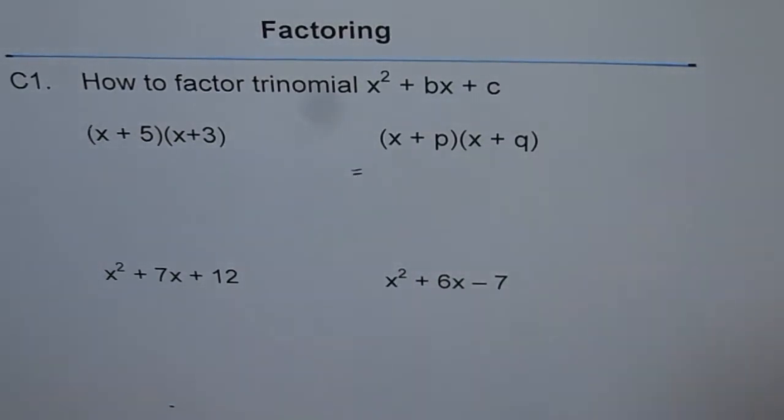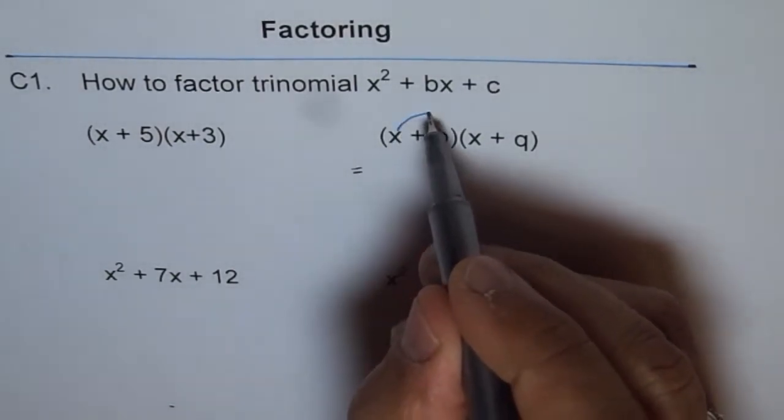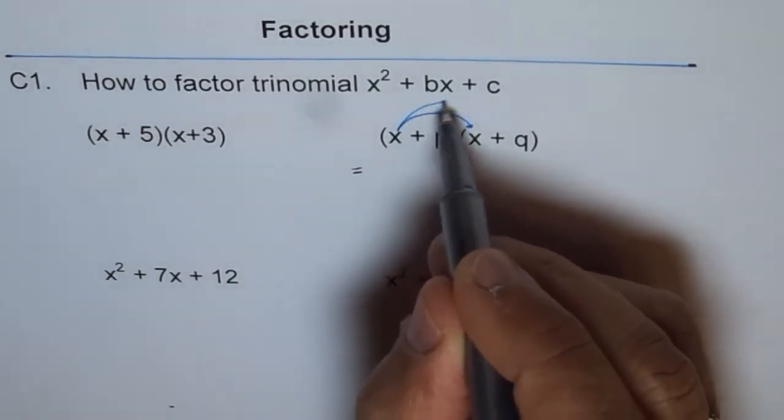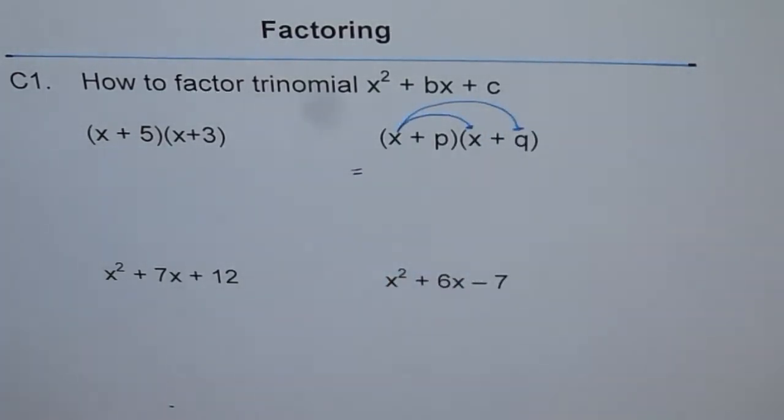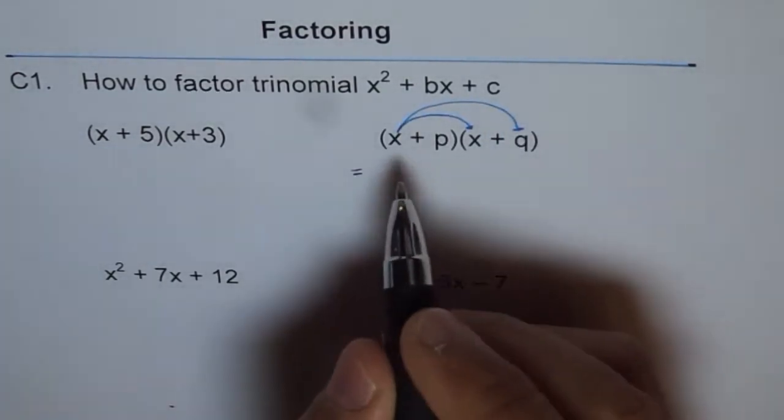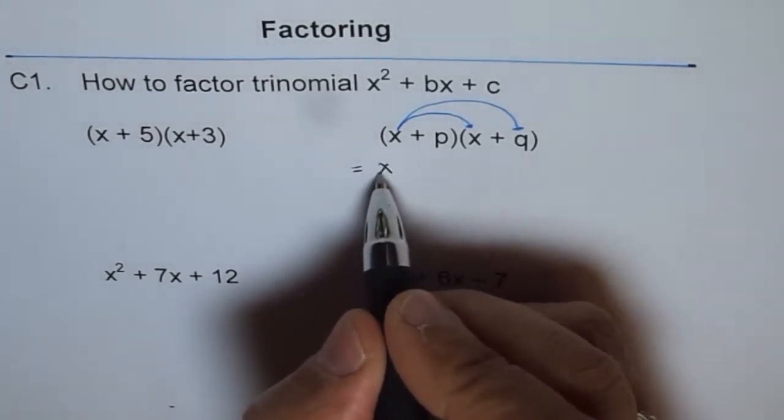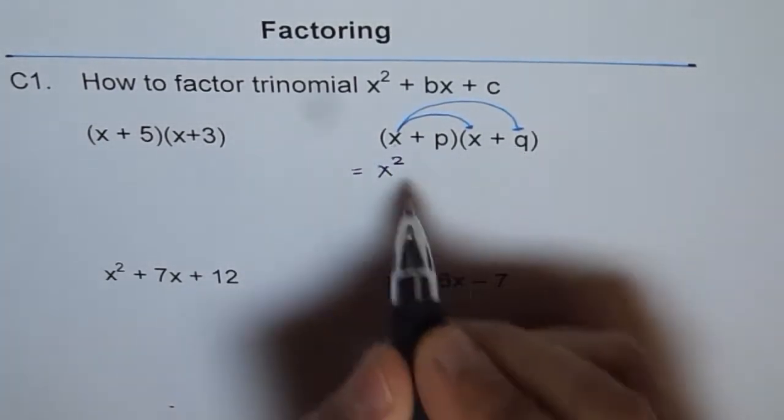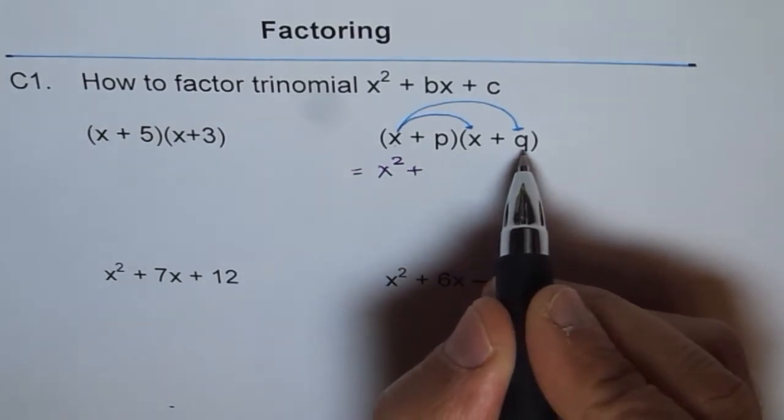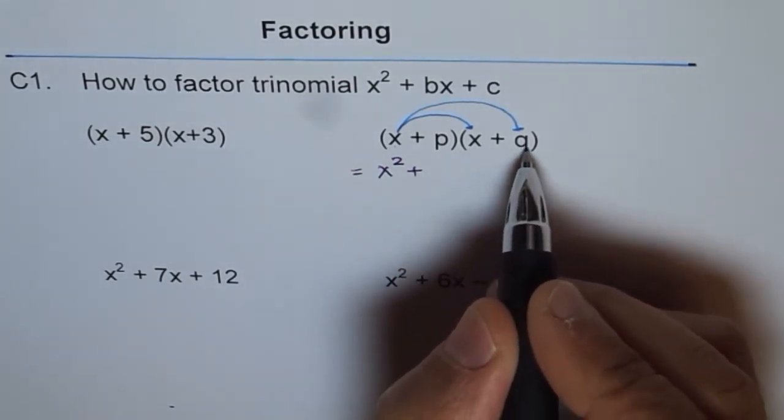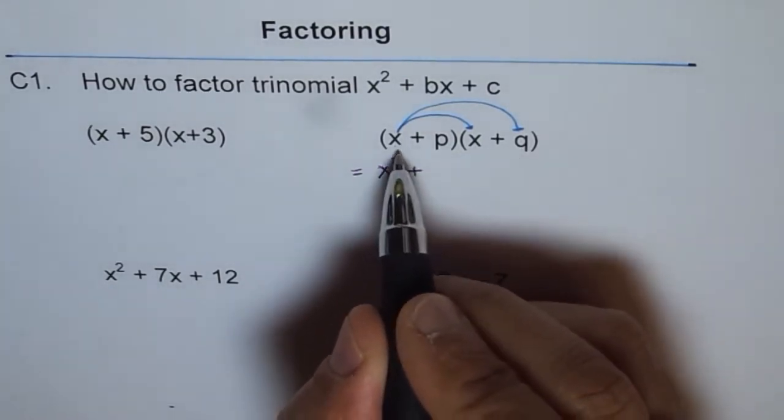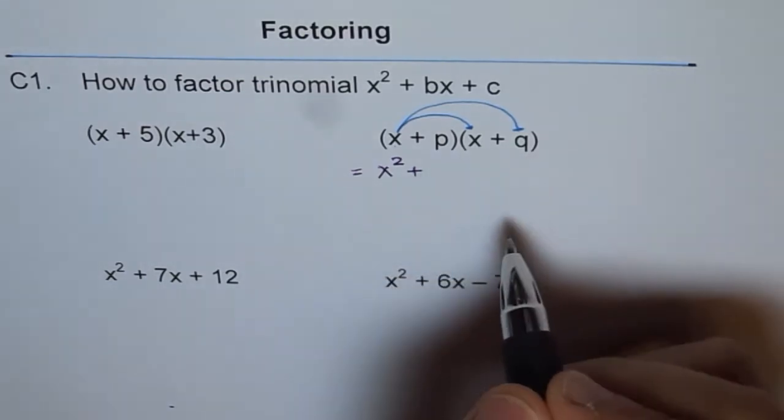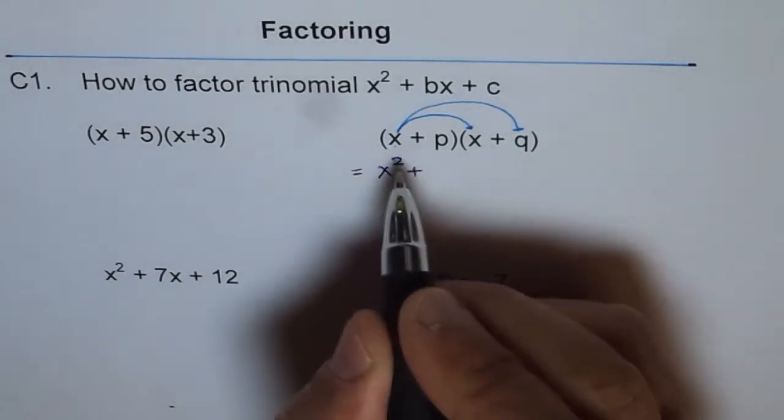So expanding really means we will multiply first with x these two terms. x squared you get and then x times q you get xq. It's always better to write the constants first. Here x is the variable and p and q are constants. So we'll write qx.